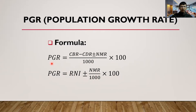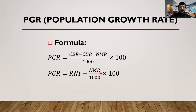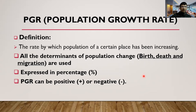You must remember both formulas. The plus-minus sign is used because NMR can be both positive and negative. If a positive value is given, use plus; if a negative value is given, use minus. Many students mistakenly apply the plus-minus sign to RNI as well — that is incorrect. Write RNI separately, then ± NMR. The ÷ 1000 applies to NMR only.